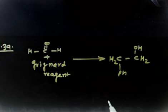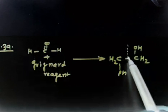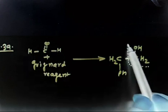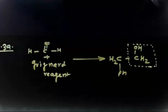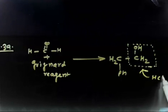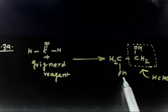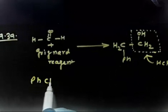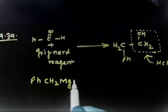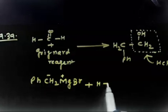What Grignard reagent will you use? This part is coming from formaldehyde (HCHO), and this part is coming from the Grignard reagent. So I should take Ph-CH₂-MgBr. If I treat Ph-CH₂-MgBr with HCHO, I will get the desired product.